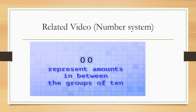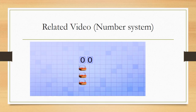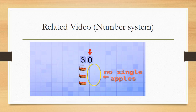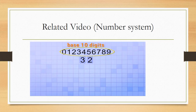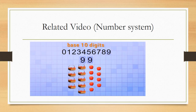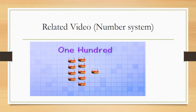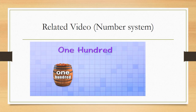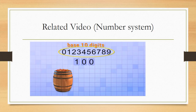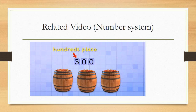Using these two number places together lets us represent amounts in between the groups of 10. For example, if we've picked 30 apples, there's a 3 in the tens place and a 0 in the ones place. If we've picked 32 apples, there's a 3 in the tens place and a 2 in the ones place. Using only our 10 digits and these two places, we can count from 0 up to 99. At 99, both places are maxed out. If we pick one more, we have 100, and we use a new number place called the hundreds place to count groups of 100.